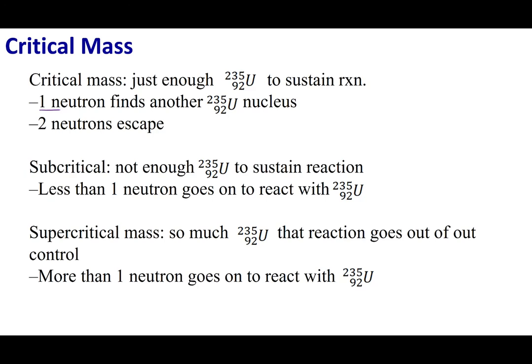If we have a subcritical mass, when we break open the uranium, the three neutrons generated don't find another uranium, and the reaction eventually stops. However, there's another scenario called the supercritical mass: two or three of those neutrons each find another uranium, and the reaction starts to go out of control. Two becomes four, four becomes eight, and suddenly the reaction explodes.